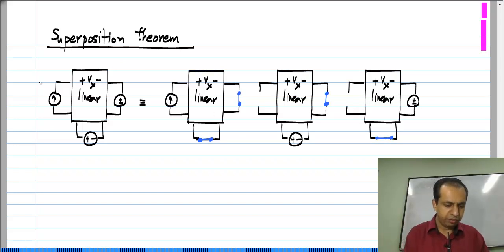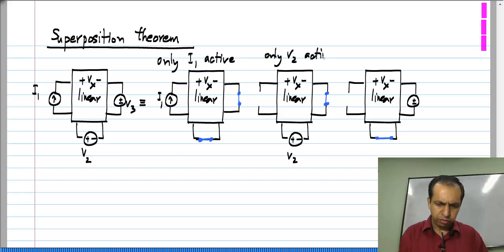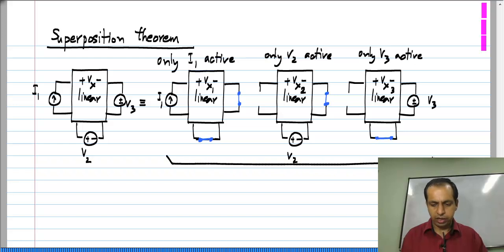The first one in which only the current source is active. So, let say I will label these I_1, V_2 and V_3. So, the first one is with only I_1 active and the second one is with only V_2 active and the third one is with only V_3 active. I measure V_x with each of these cases I could label this V_x1, V_x2 and V_x3. Then, I will superpose these cases and find the solution V_x is V_x1 plus V_x2 plus V_x3.